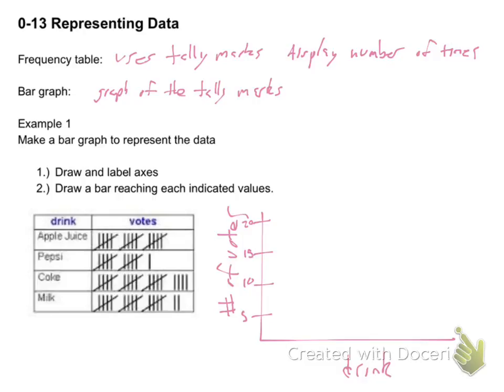Across the bottom, I am going to put all my different categories. And those categories were, apple juice. I'm going to put AJ, apple juice. P for Pepsi. C for Coke. And M for milk.